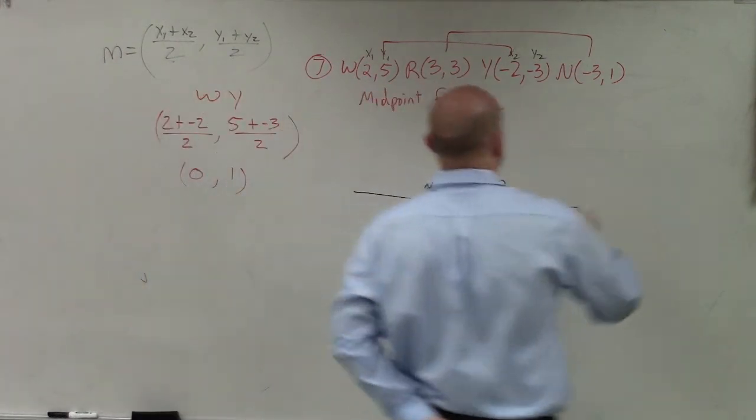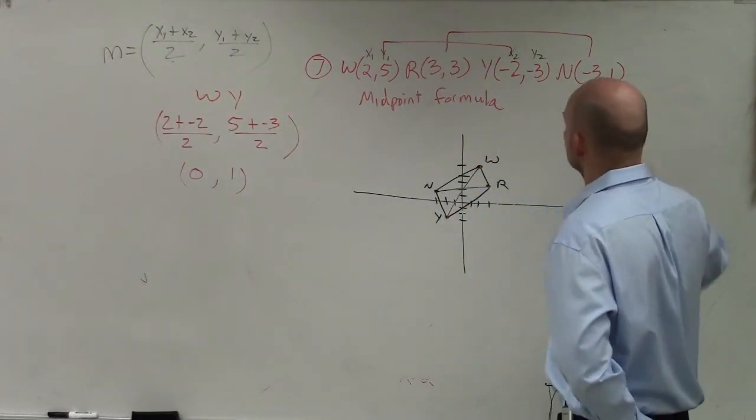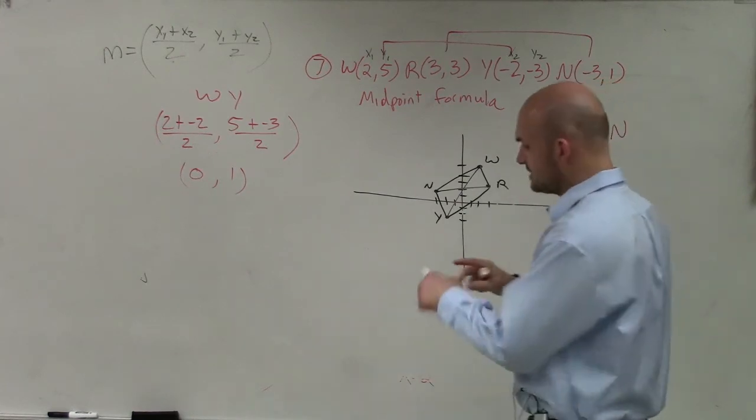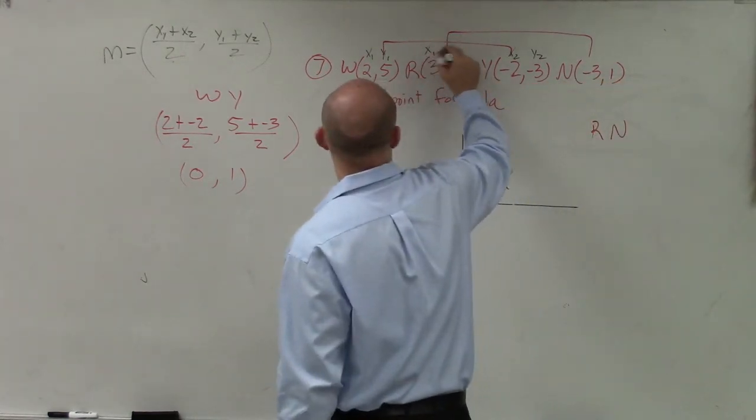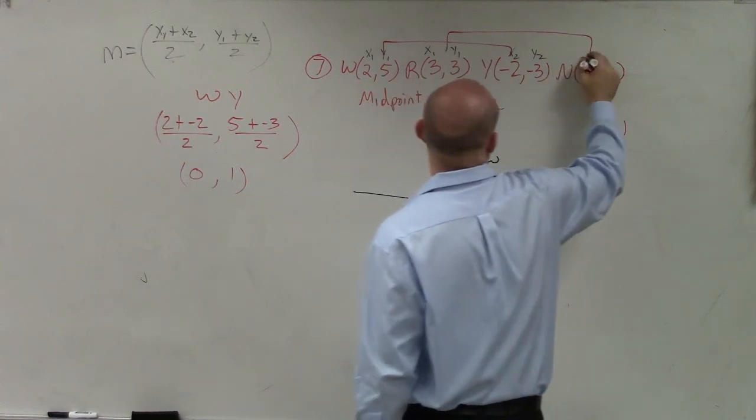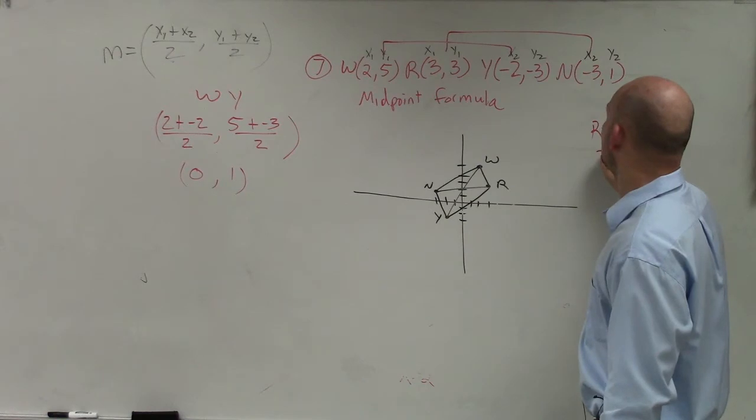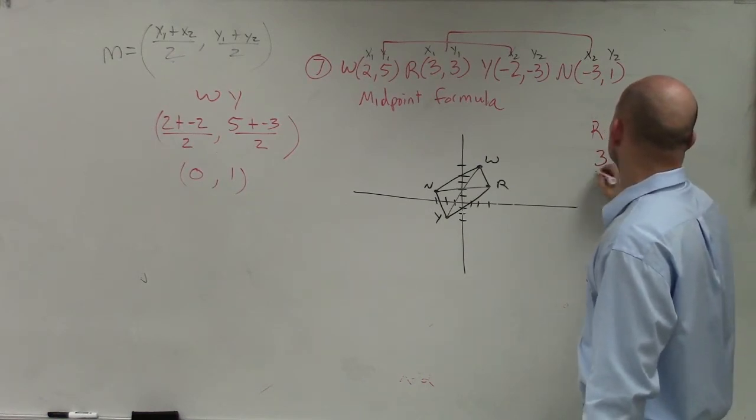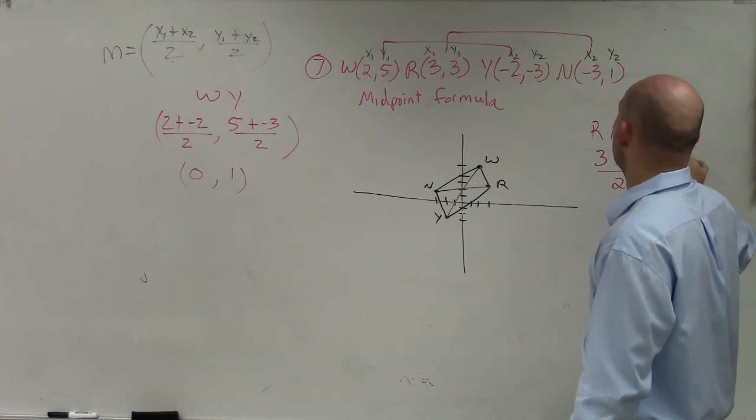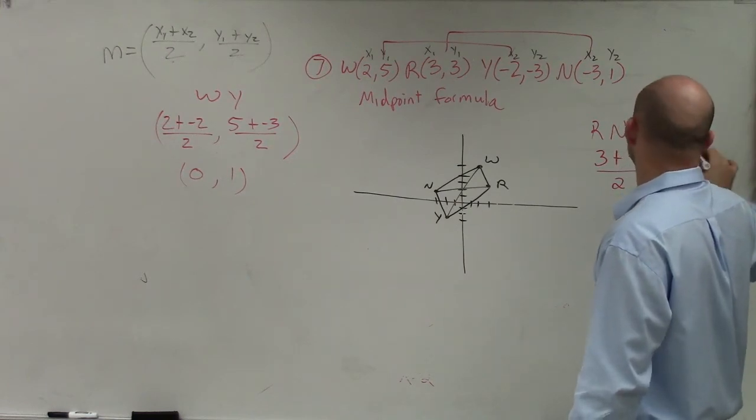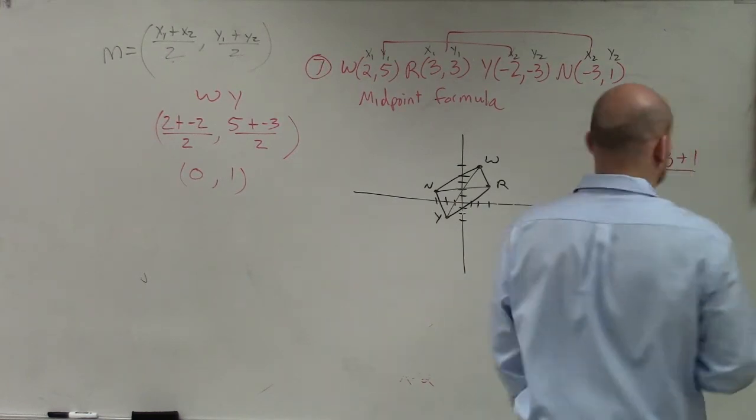Now let's find the midpoint of RN. So I have, let's go ahead and label this now, (x1, y1), (x2, y2). So here I'll have (3 + -3) / 2, and (3 + 1) / 2.